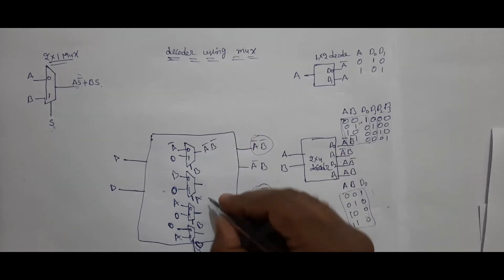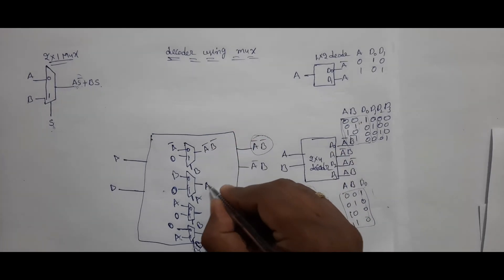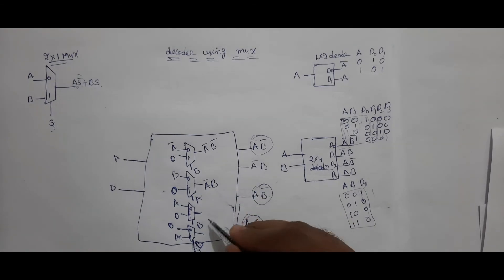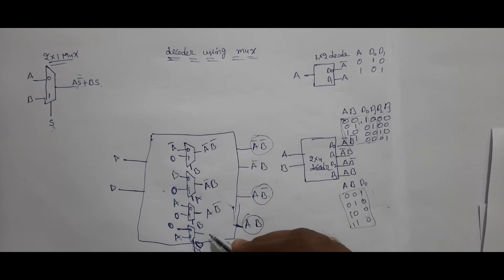What is the output here? A-bar B. What is the output here? A B-bar. What is the output here? A B.